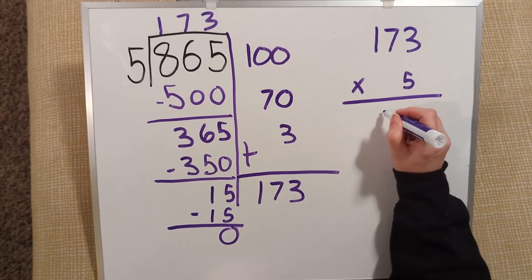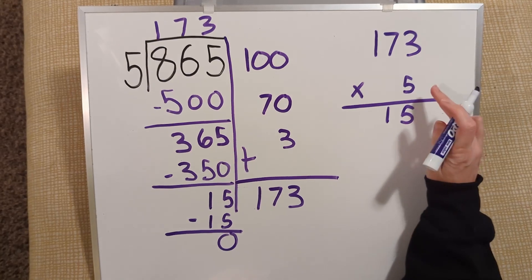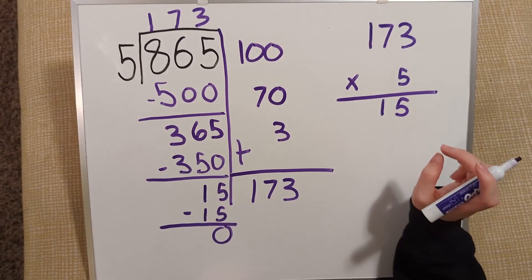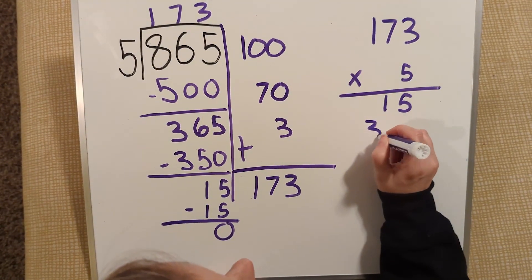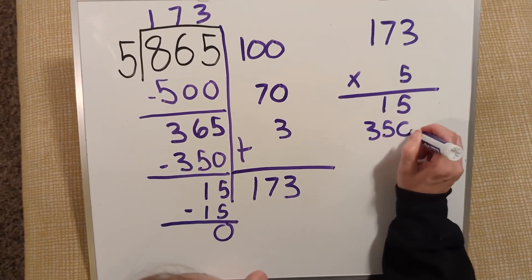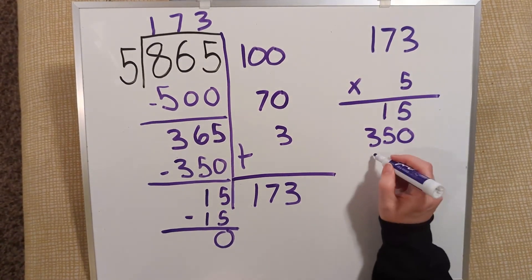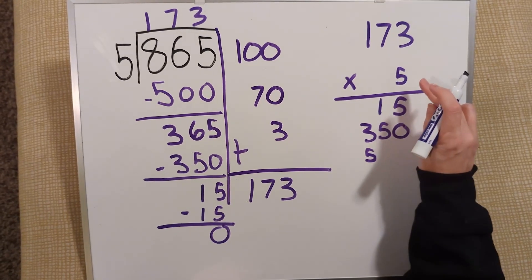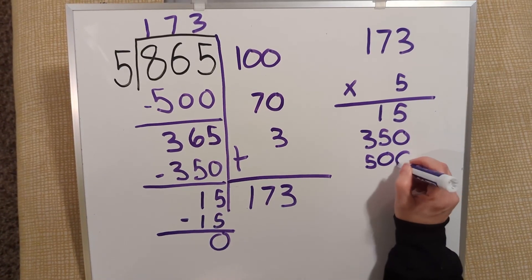5 times 3 is 15. 5 times 7 is 35. But I'm actually multiplying 5 times 70. So that would be 350. And 5 times 1 is 5. But I'm multiplying by the hundreds place. So I'm actually multiplying 5 times 100. Which gives me 500.